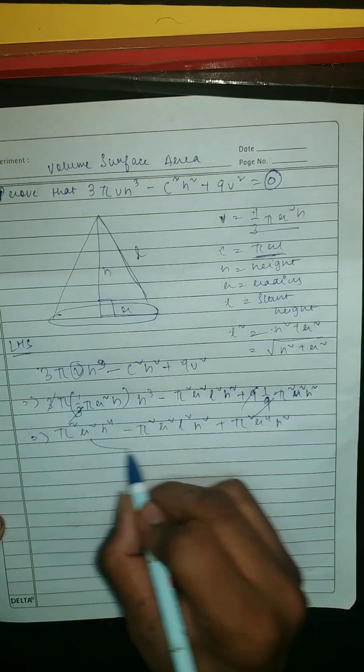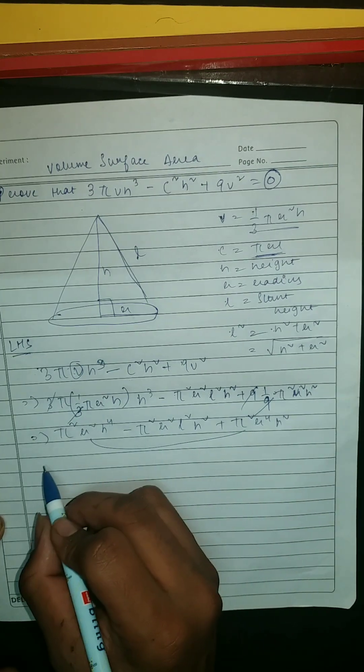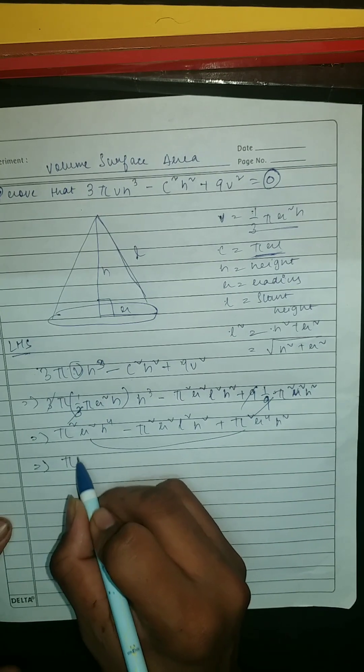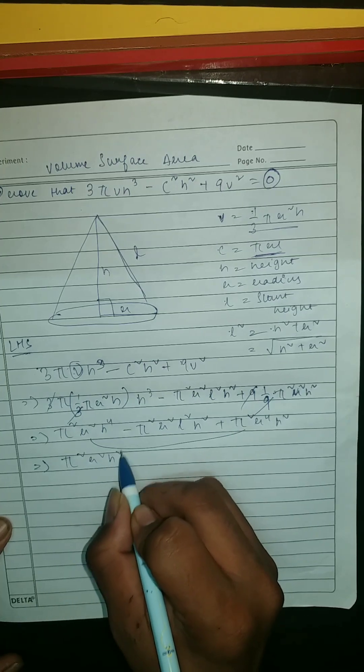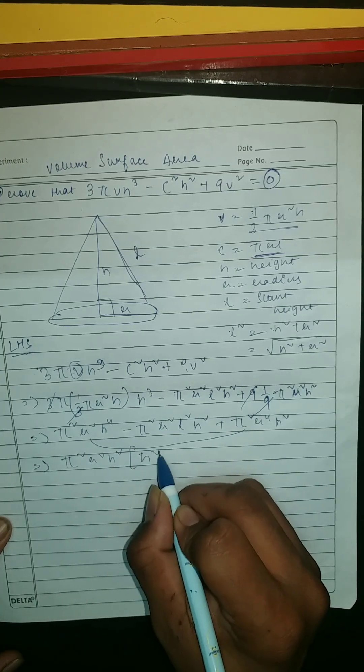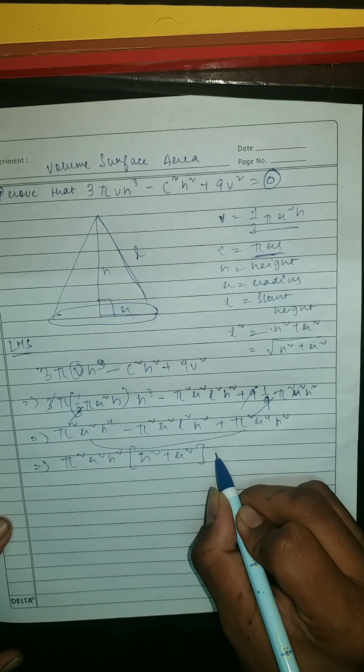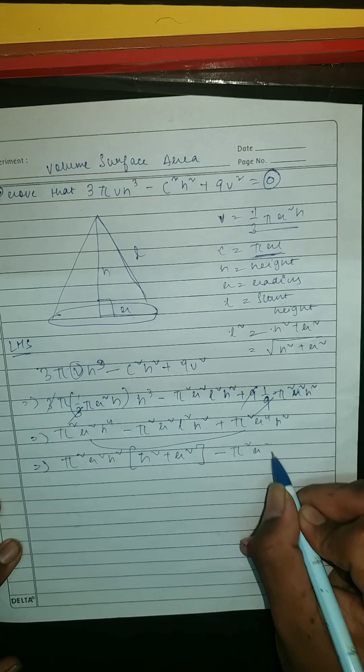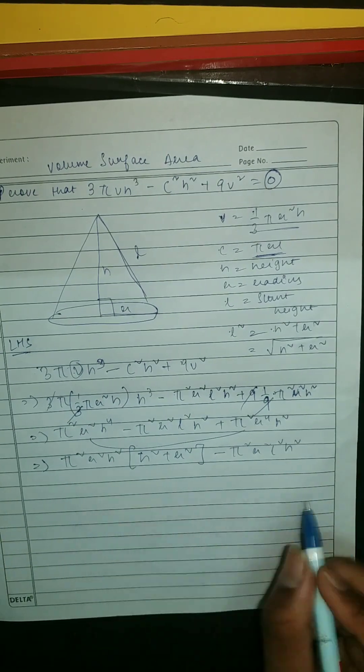And here we can see this and this, so we're gonna take here common: π²r²h² in bracket (h² + r²) minus π²r²l²h².